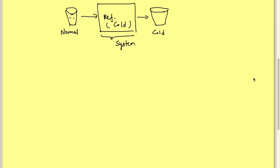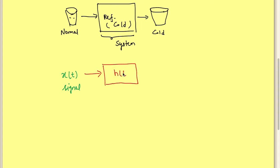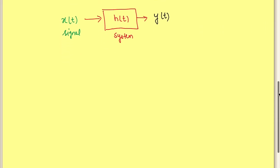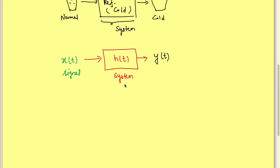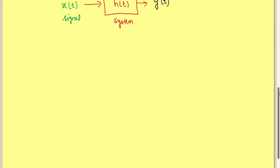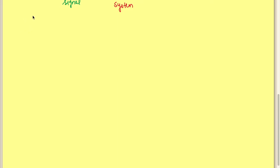Technically, we can write it like this: if x(t) is my input signal and there is some system H(t), then this signal x(t) will be transformed into some other signal y(t). So that is the definition of a system.